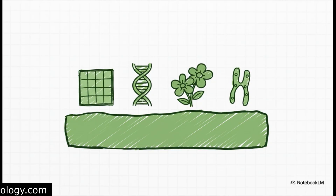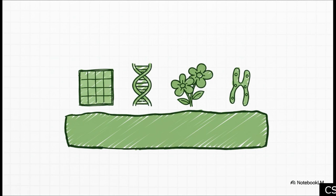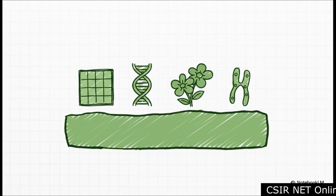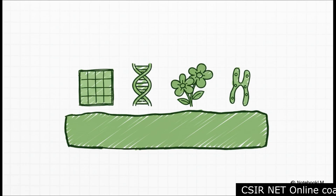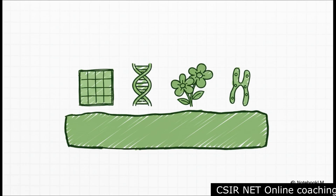Here are the four pillars of Unit 8. First up: Mendelian principles — that's the absolute bedrock. Then the concept of the gene — really understanding what a gene is. Next, extensions of Mendelian principles: codominance, epistasis, all that good stuff. And finally, the big one — gene mapping methods, which is often very mathematical. The vast majority of questions come from these four areas. Your preparation has to start and end here.